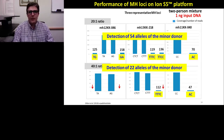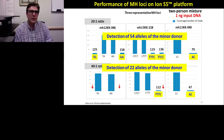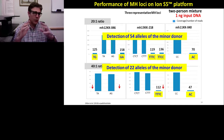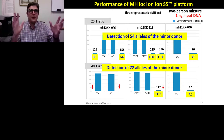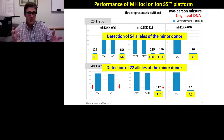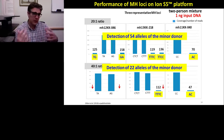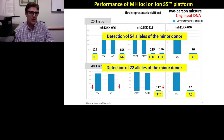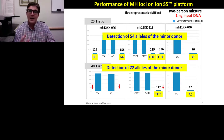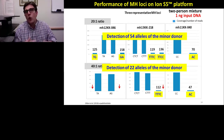Microhaplotypes are not going to replace STRs — STRs are here to stay. There is enormous inertia: the convicted offender database contains millions of STR profiles, and forensic profiles within CODIS are useful for identifying offenders. But microhaplotypes have the potential to enhance mixture deconvolution and to complement STRs.